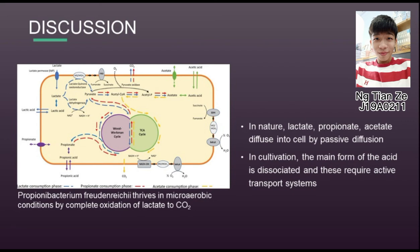A pyruvate oxidase, shown as a black dotted line, that produces acetyl-CoA from pyruvate and phosphate while consuming oxygen has also been identified in the genome of Propionic bacterium freudenreichii. This may function as an energy-yielding oxygen tolerance mechanism, which may explain the lower propionic acid ratios found in micro-aerobic conditions compared to anaerobic conditions in P. freudenreichii.